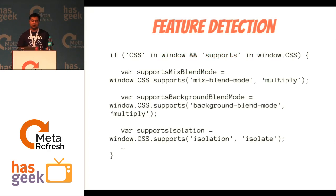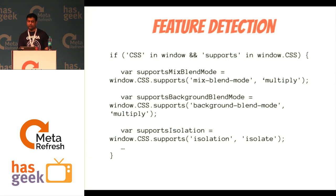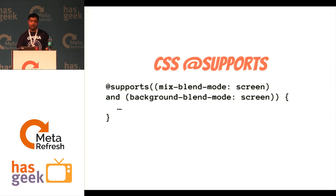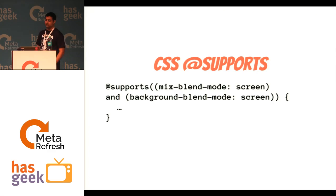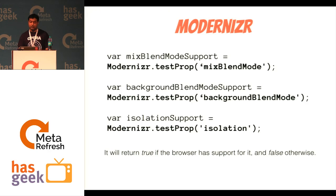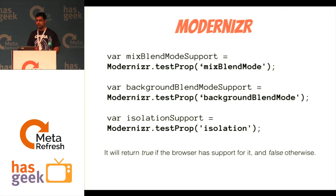For feature detection, there are multiple ways. In JavaScript, you can use CSS.supports and check for that property. Using CSS, you can use the @supports rule — for example @supports (mix-blend-mode: screen) or (background-blend-mode: screen). You can also use Modernizr's testProp function, which will return true if supported and false if not. The testProp function can be used for a lot of things beyond just detecting blend modes.